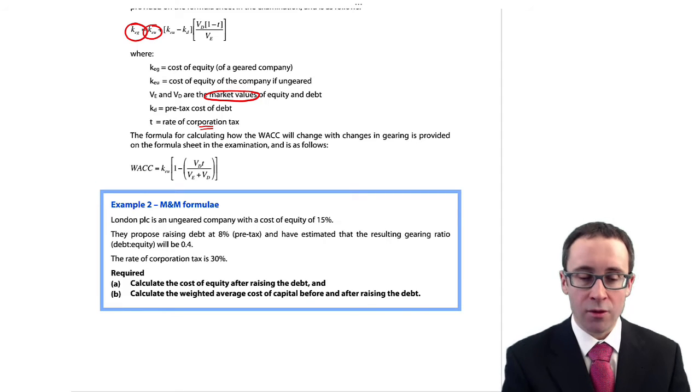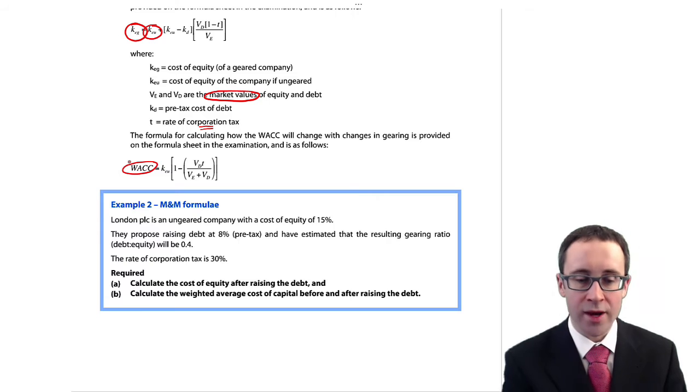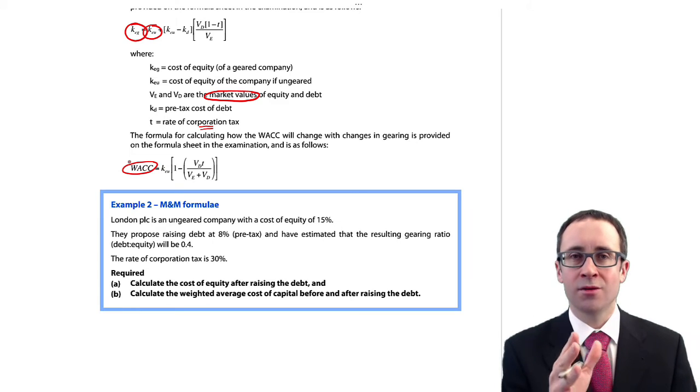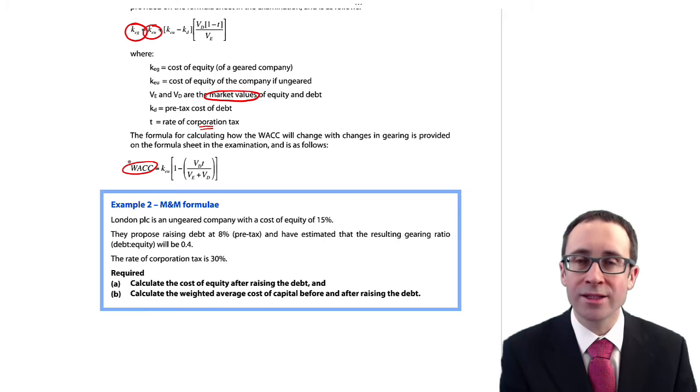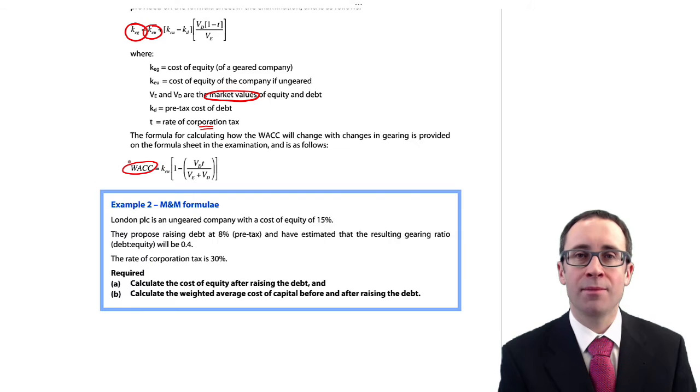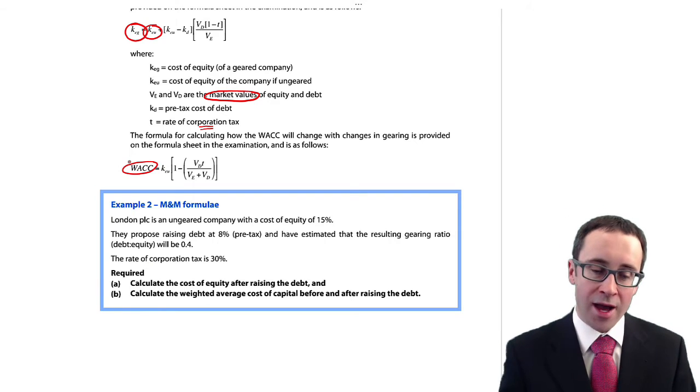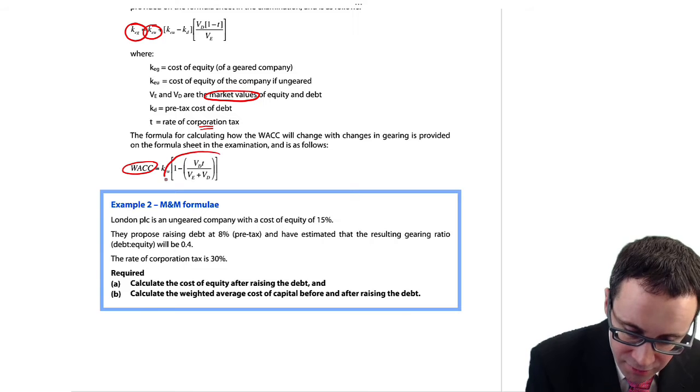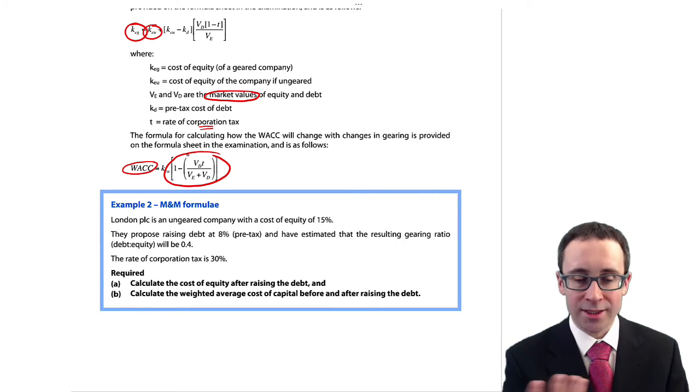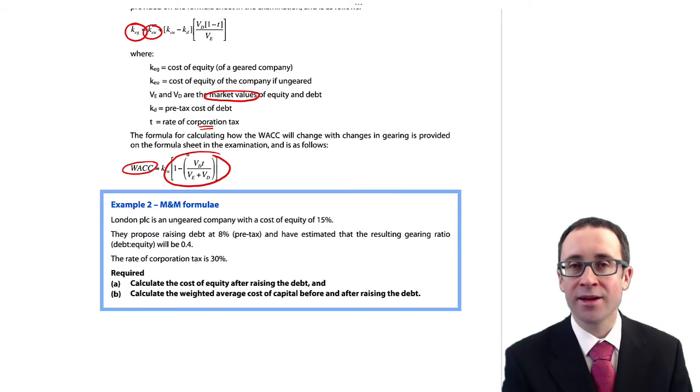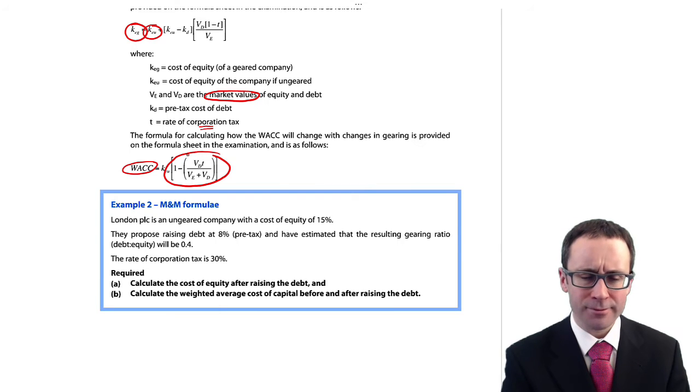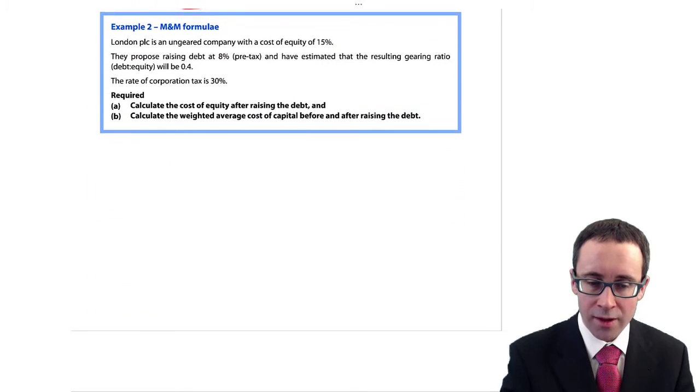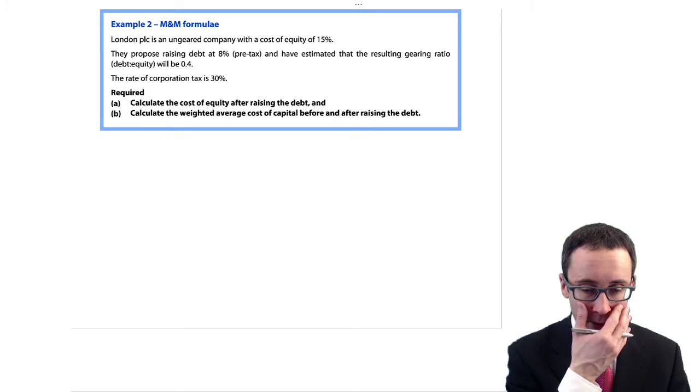I haven't seen any questions that try and confuse you by putting in personal tax as well. Remember, personal tax is ignored. We just look at the rate of corporation tax. So using the formula, we can work out the cost of equity for a geared company. What we can also then do is think about the weighted average cost of capital. So the weighted average cost of capital takes the ungeared cost of equity. Because remember, an ungeared business, the weighted average cost of capital and the cost of equity are going to be the same, because there is zero debt. So it has to be equal to the weighted average cost of capital and the cost of equity for the ungeared business.